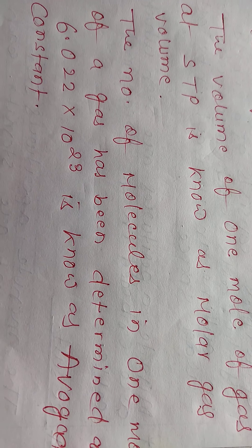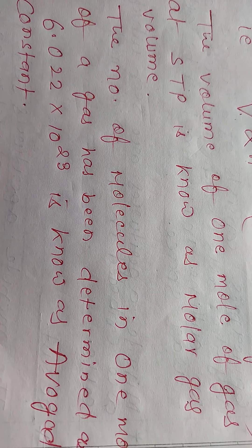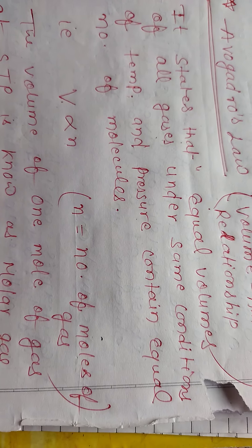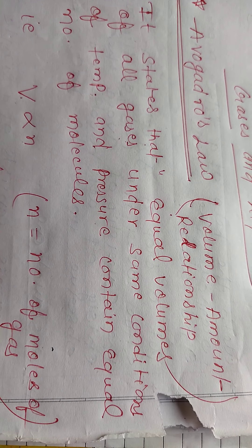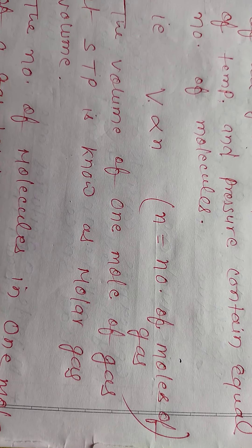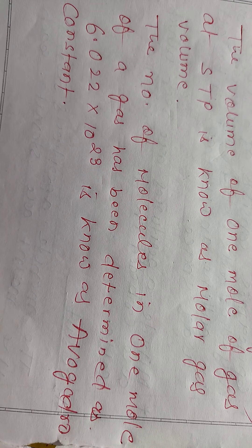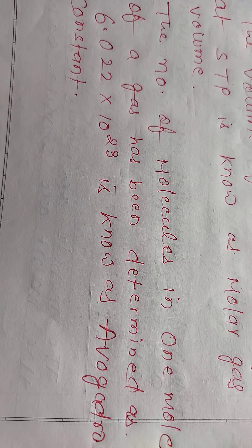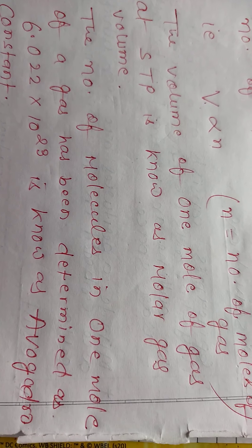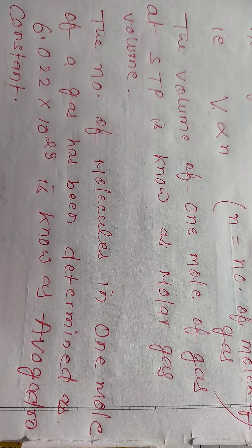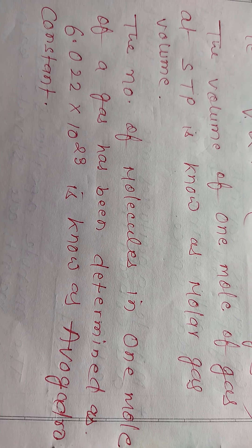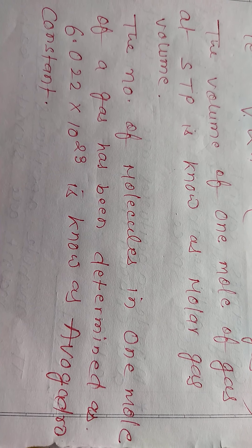Avogadro's law is a volume-amount relationship. It states that equal volumes of all gases under the same condition of temperature and pressure contain equal number of molecules, so V is proportional to N, where N is equal to number of moles of gas. The volume of one mole of gas at STP is called molar gas volume, and the number of molecules in one mole of gas is determined as 6.022 into 10 to the power 23, known as Avogadro's constant.